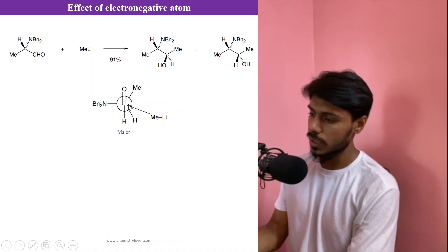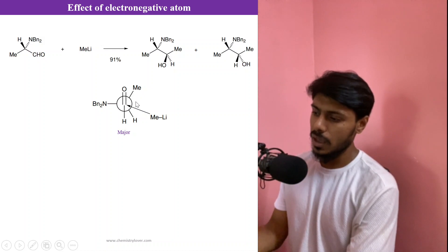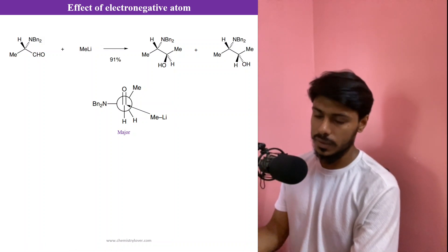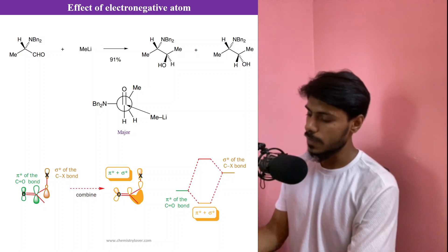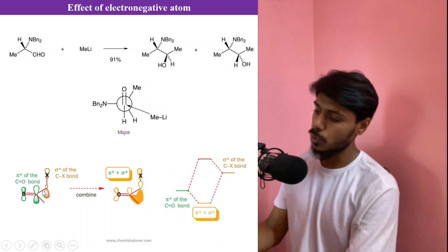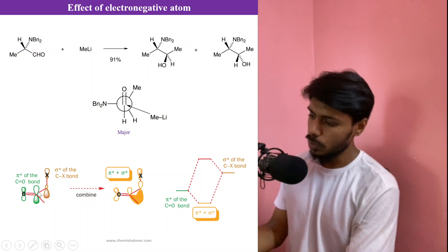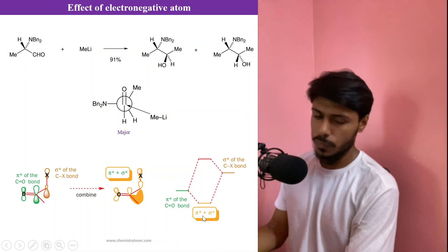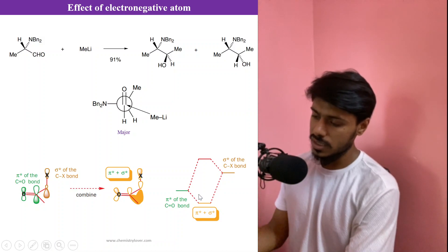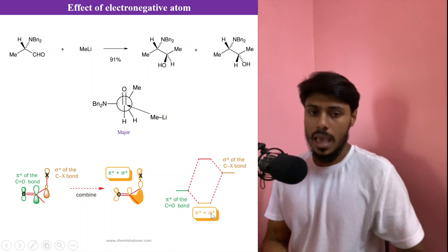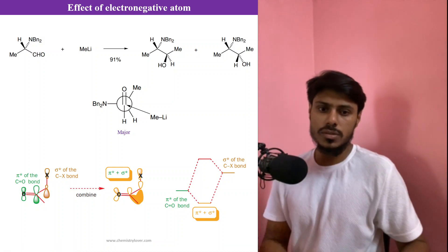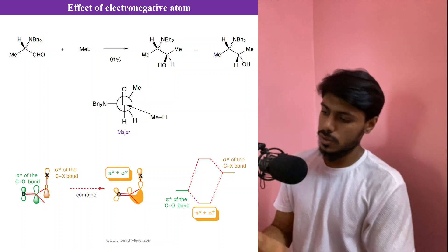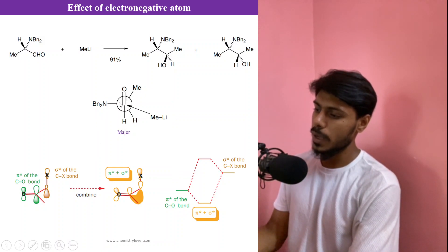Why must we place the electronegative group perpendicular to the carbonyl? We can establish this using a molecular orbital diagram. When the electronegative atom X is placed perpendicular to the carbonyl, the π* of the carbonyl and the σ* of the C–X bond can interact, forming a new combined π*+σ* orbital. This lowers the energy of the π* orbital, making it easier for the nucleophile to attack. That is why the electronegative atom must be placed perpendicular.